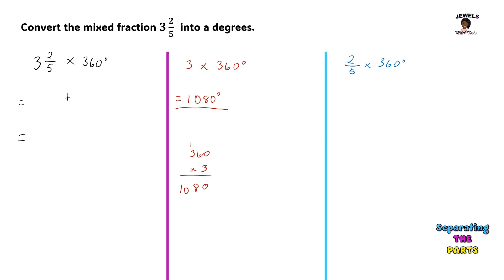I'm going to write that in. Let me put here first my 3. Remember that 3 and 2/5 simply means that 3 wholes is being added to 2/5. So that is my 1080 degrees being added to our proper fraction conversion to see what my proper fraction is as it is changed to degrees.